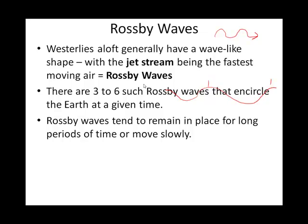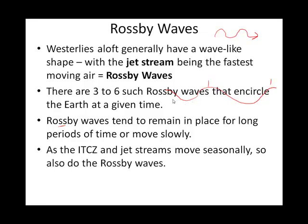These Rossby waves can hang out at the same location for a long time, or they can move slowly from west to east. The Rossby waves are affected by the cells — what's going on in the Hadley cell, where the intertropical convergence zone is, and the Ferrel and the polar cells. So they do move around seasonally.